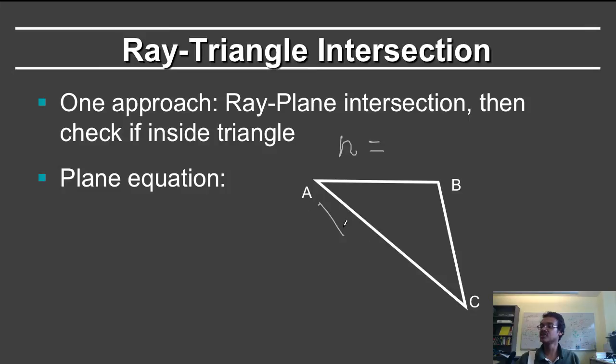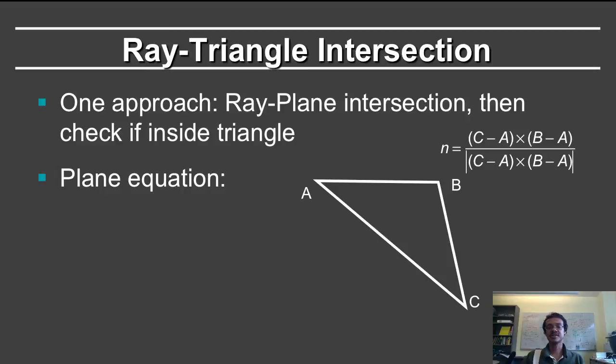So you have c minus a and b minus a. It can be given by c minus a cross product with b minus a. I've just normalized the cross product here.